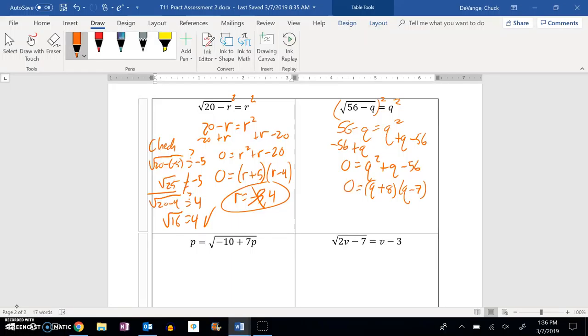So these two things multiply to give me 0. So what makes this a 0 would be a negative 8. What makes this 0 is a 7. Let me plug them in and see if they work.